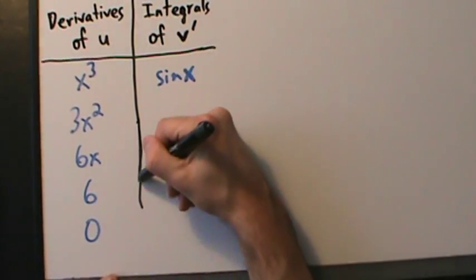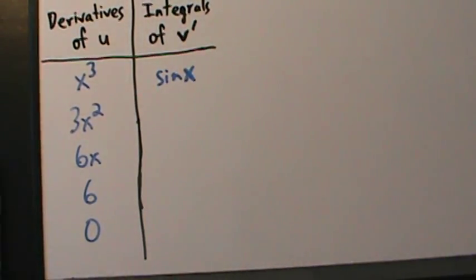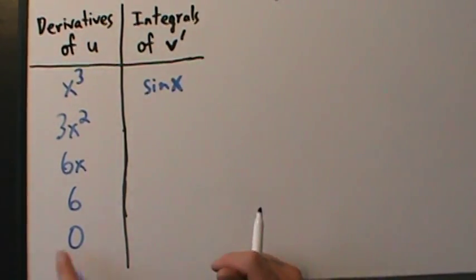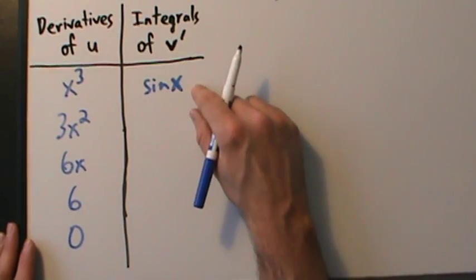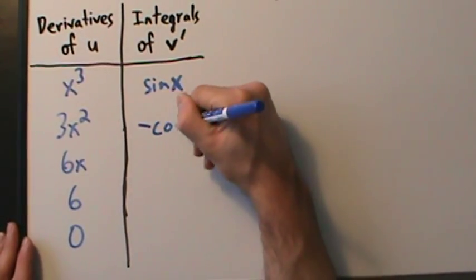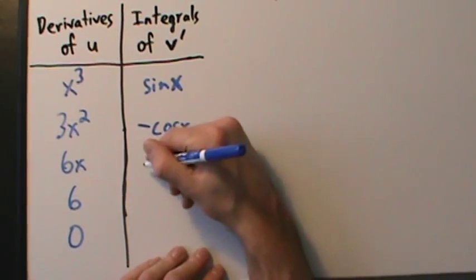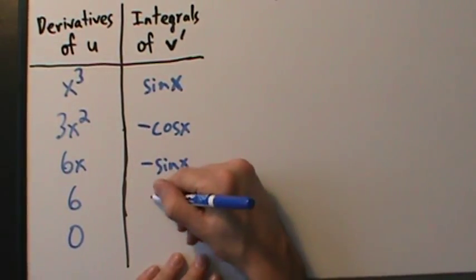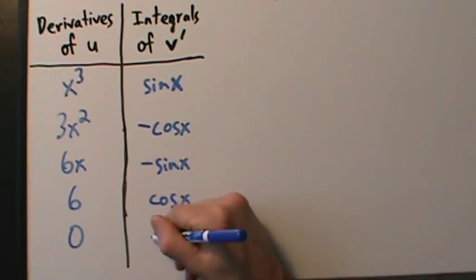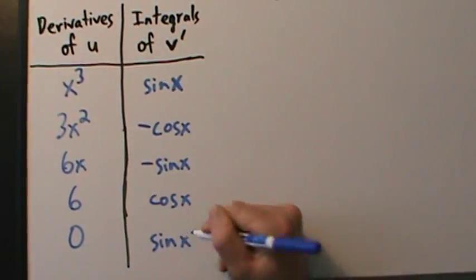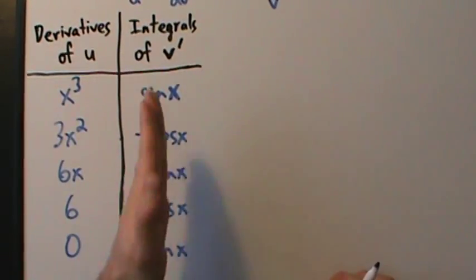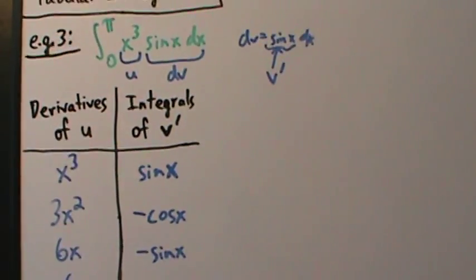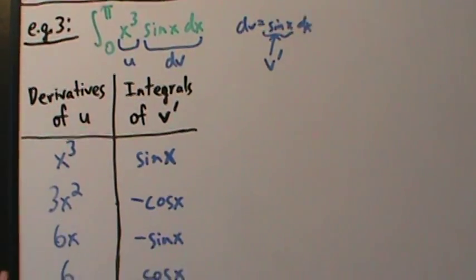So we stop there and extend the table. Now the next step is to take integrals of v-prime, keep integrating until we hit the same row. If we have sine of x and integrate, we get negative cosine of x. Integrate that, we get negative sine of x. Integrate that, we get cosine of x. Integrate that, we get sine of x. Since this is a definite integral, there won't be any arbitrary constants at all, so that's nice.